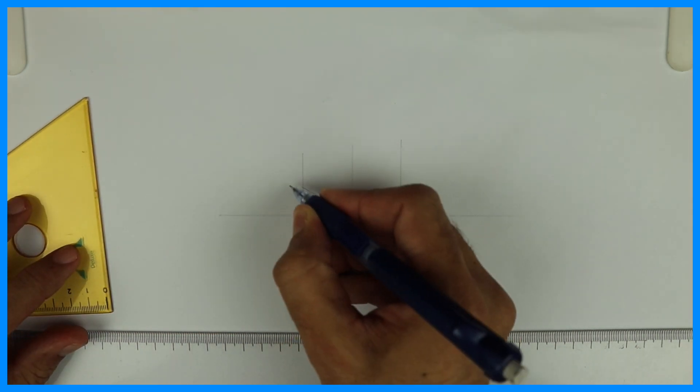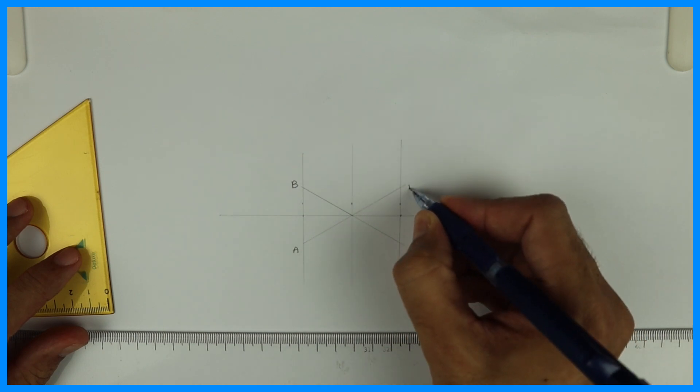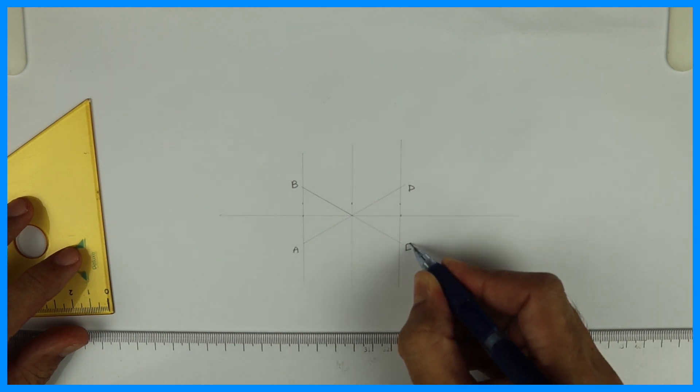See, this is A, this is B. AB is the side of the hexagon. This is D and this is E.